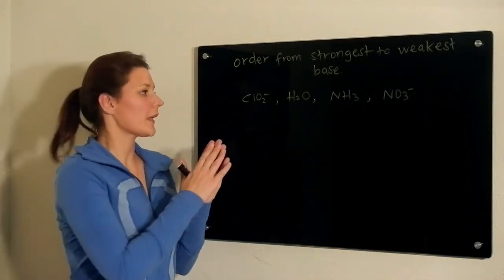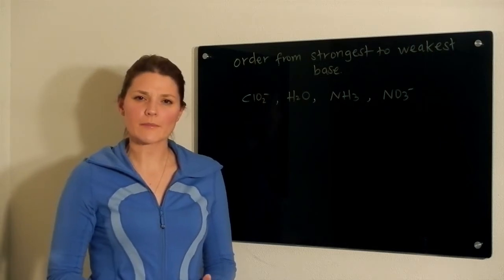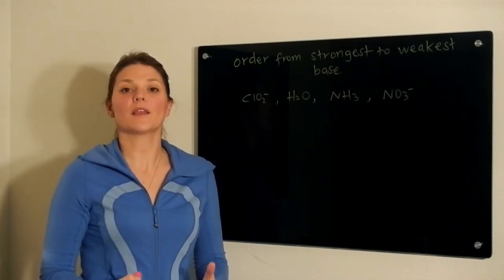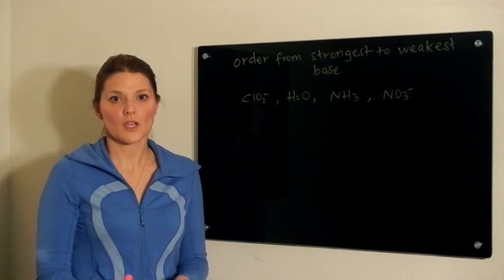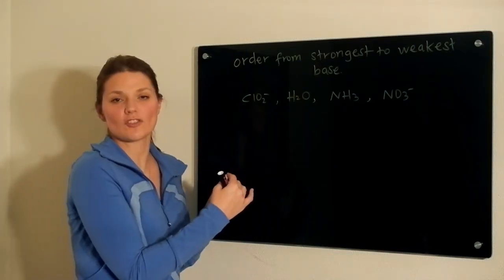You are definitely able to compare them based solely on a Kb value. I find sometimes people have difficulty with that because usually you're provided with Ka values. So what that means is you can take these and compare them to their conjugate acids.